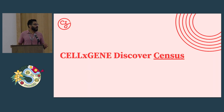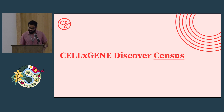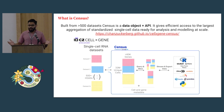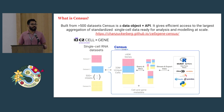Today I want to tell you about Census — a newly developed and recently released feature of Cell by Gene Discover. Census is built from more than 500 different datasets. It is both a data object and an API to access this data object.